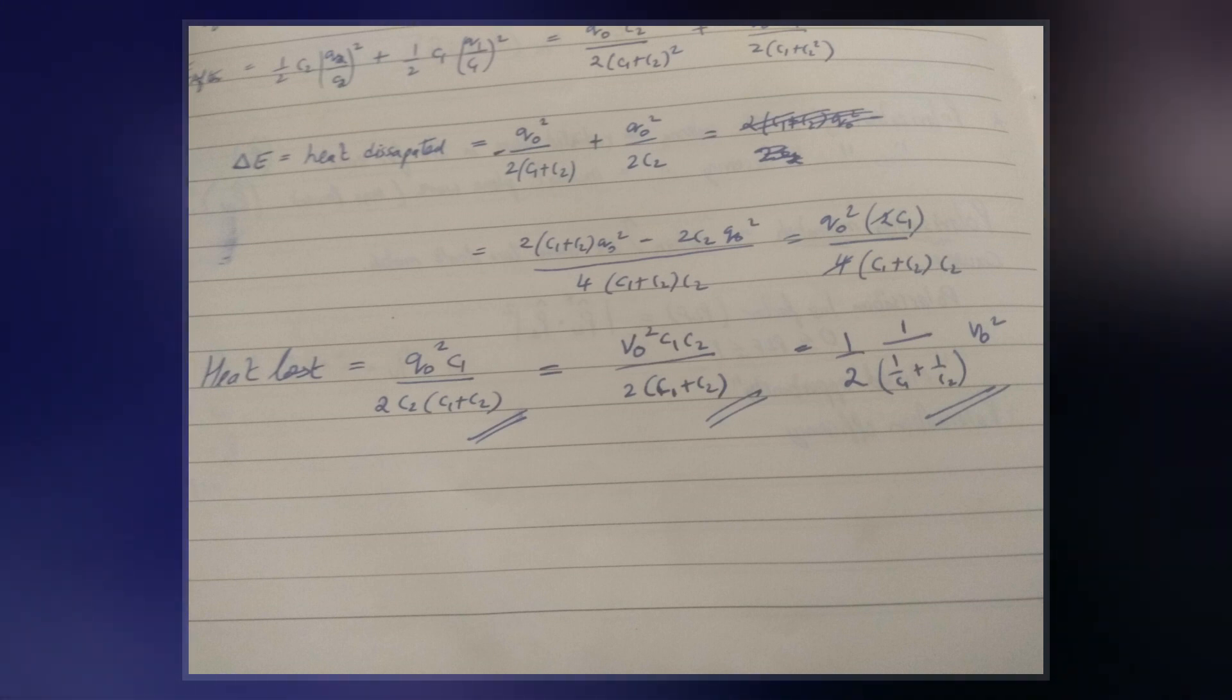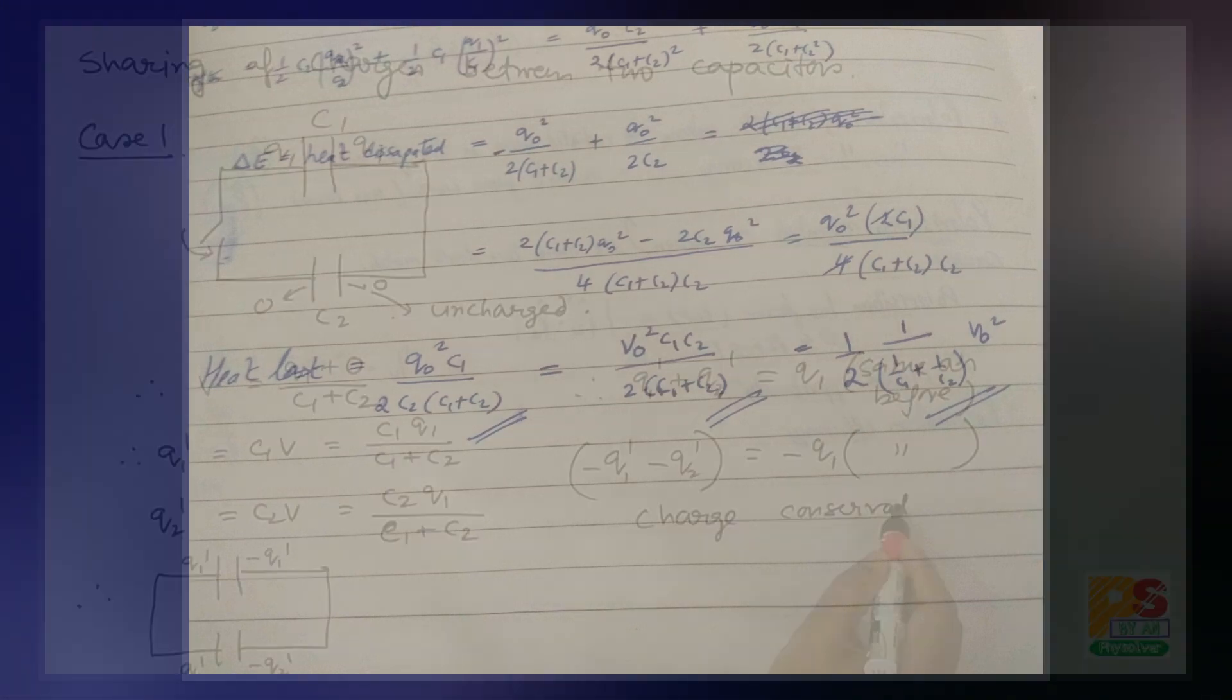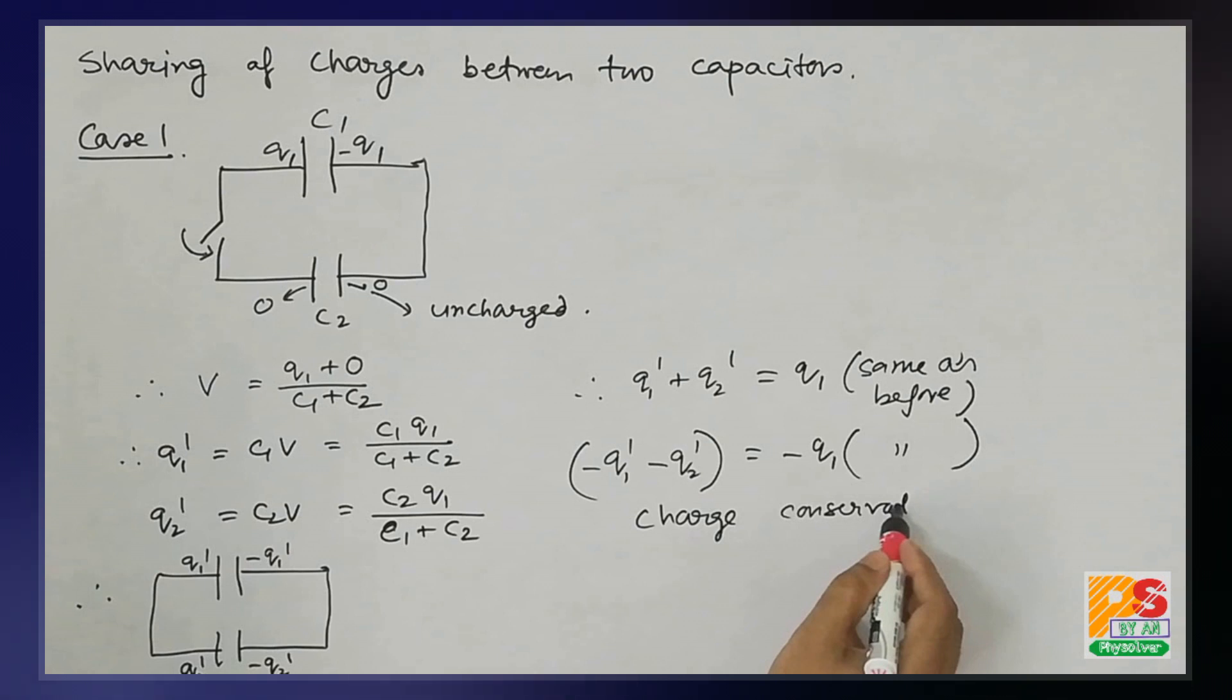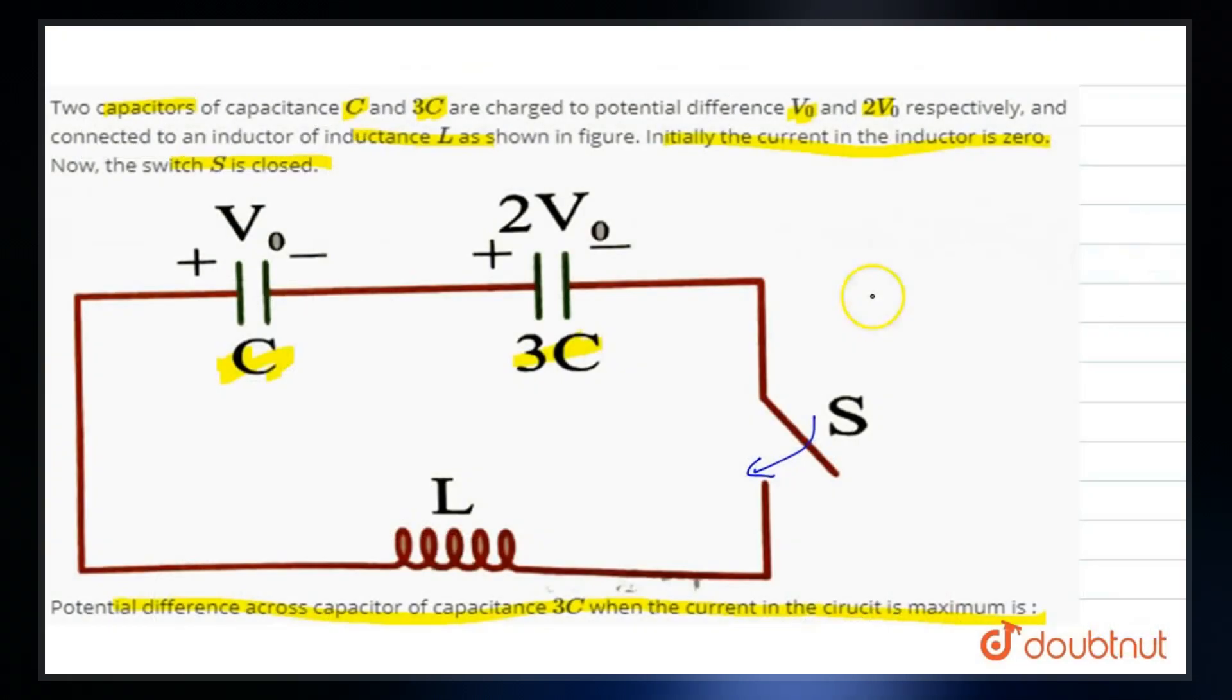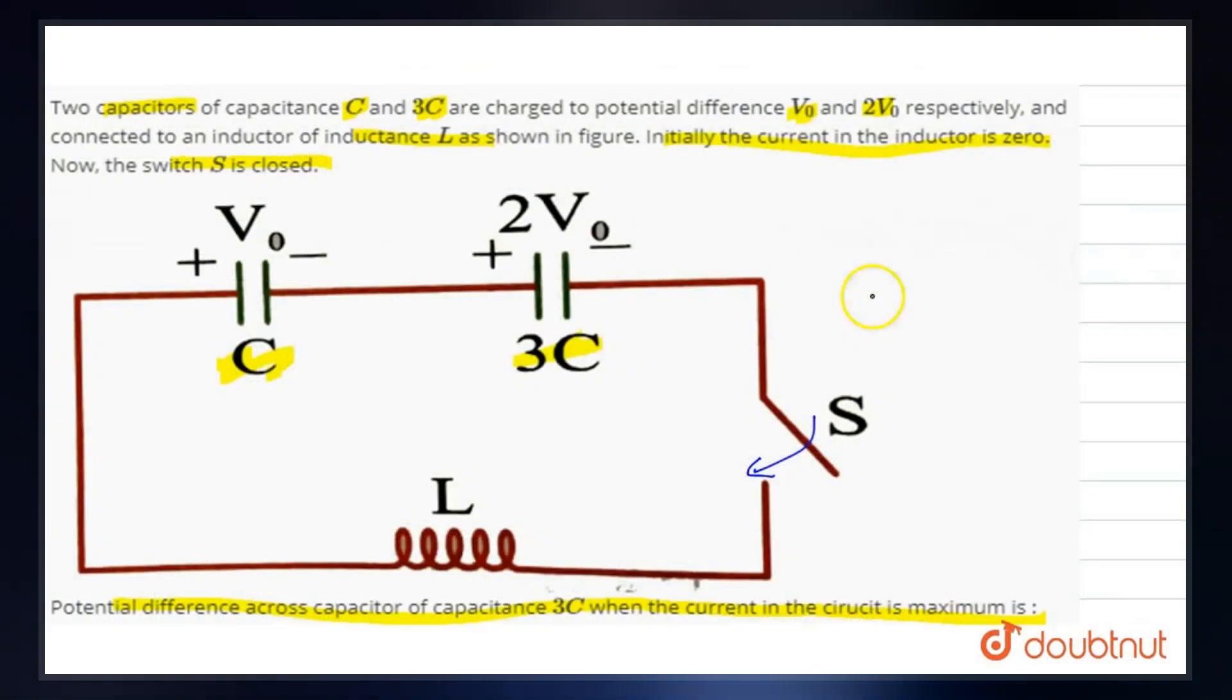On the first capacitor flows into the second, reducing the voltage on the first and increasing the voltage on the second. When a steady state is reached and the current goes to zero, the voltage on the two capacitors must be equal since they are connected together.